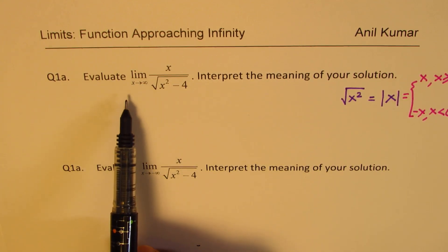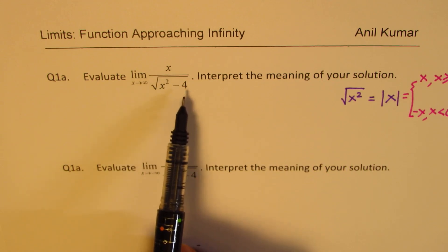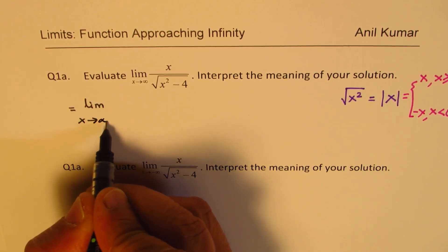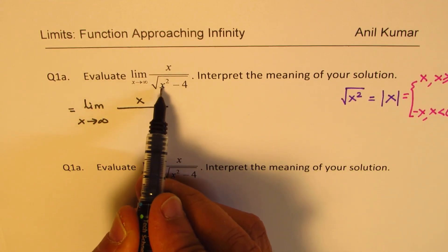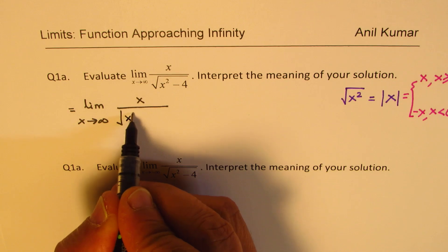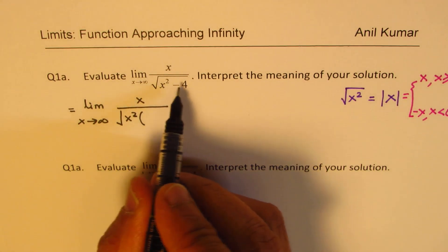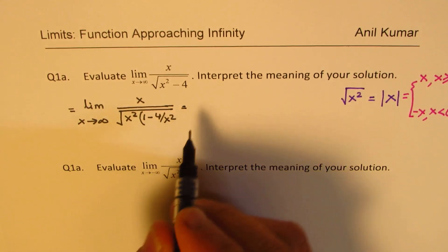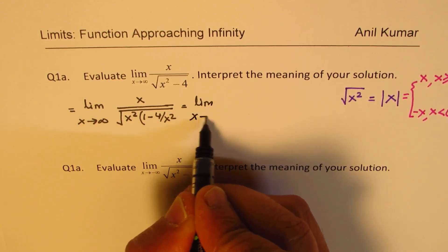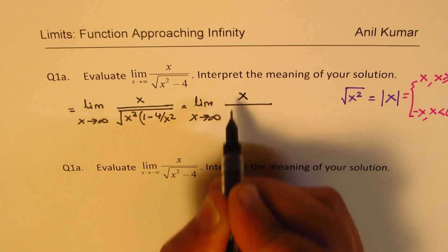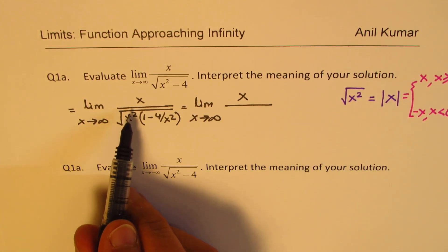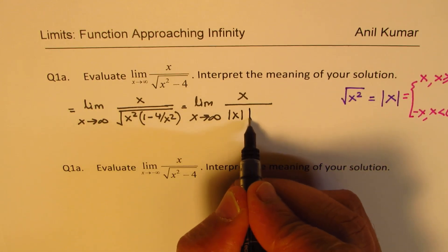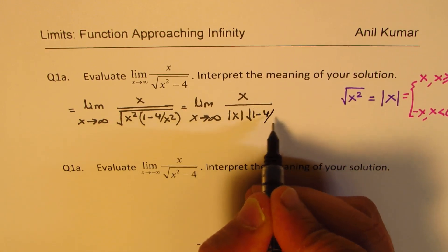We need to evaluate the limit as x approaches infinity of x over square root of x squared minus 4. We can write this as the limit as x approaches infinity of x over — factoring x squared out of the square root — which gives us x squared times the square root of 1 minus 4 over x squared. In the denominator, the square root of x squared is the absolute value of x, so we have x over absolute value of x times square root of 1 minus 4 over x squared.